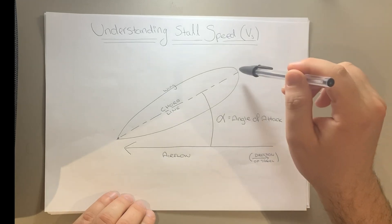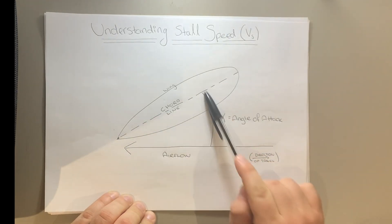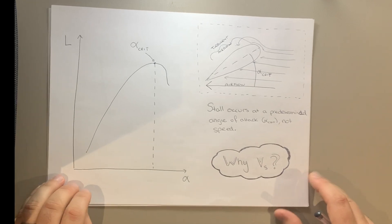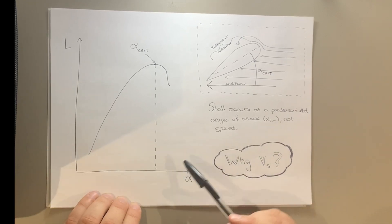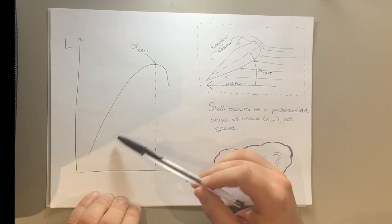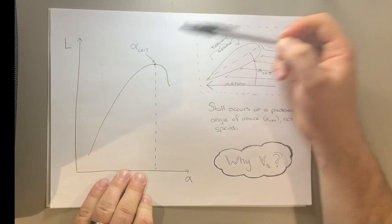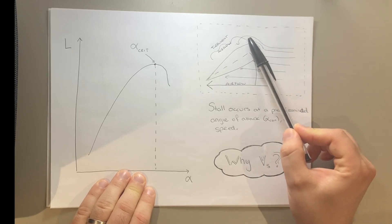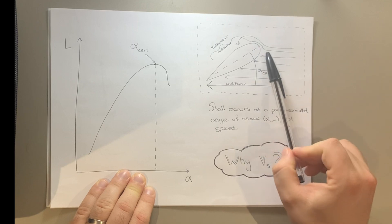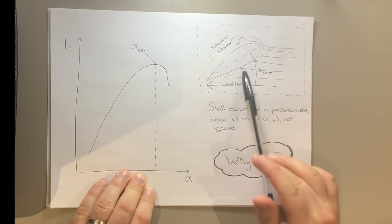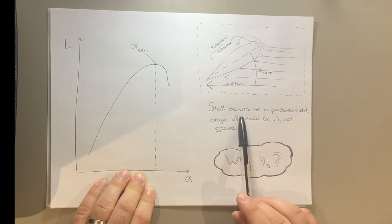So quick revision. Leading edge of a wing, trailing edge of a wing, the line between them is called a chord line. The relative airflow is in the opposite direction of travel. And the angle between them is the angle of attack. As we increase the angle of attack, we get an increase in lift up to a certain point, which we call critical angle of attack. This occurs when the airflow struggles to get over the top of the wing and becomes turbulent because it doesn't have enough energy to stick to the top surface. At that point, the wing produces less lift. So it's all about the angle, not about the speed. Stall occurs at a predetermined angle of attack, known as alpha crit, and not the speed.